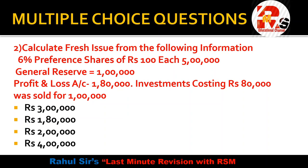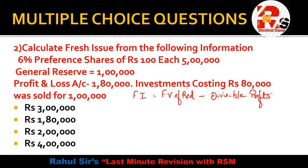Question 2 is a bit practical — you need to calculate the fresh issue. From the given information: 6% preference shares of ₹100 each, amount ₹5 lakhs; general reserve ₹1 lakh; profit and loss account ₹1,80,000. These are divisible profits. The formula is: Fresh Issue = Face Value of Redemption minus Divisible Profits.